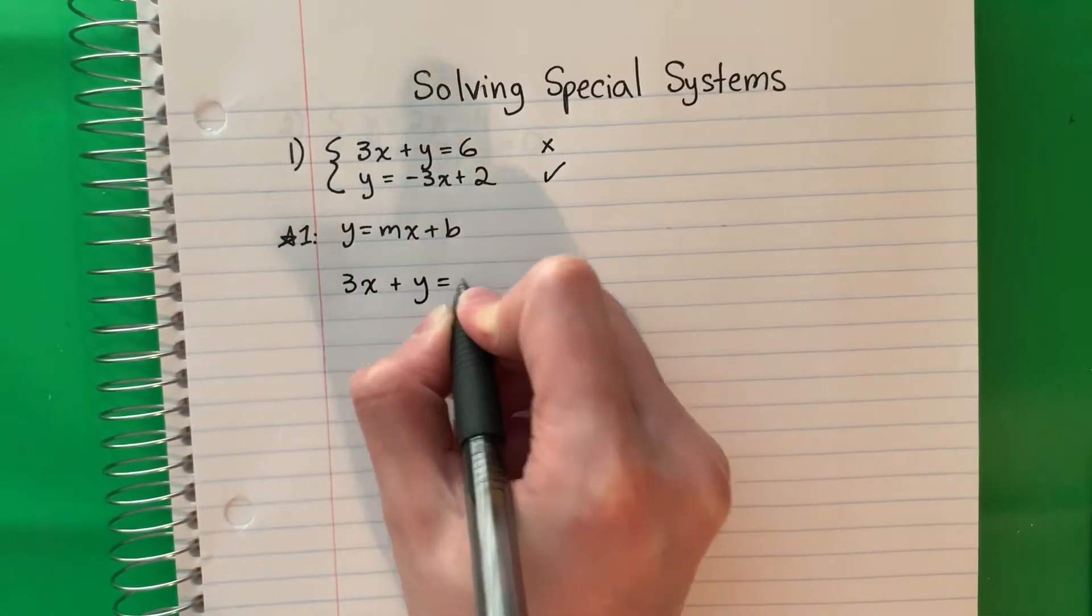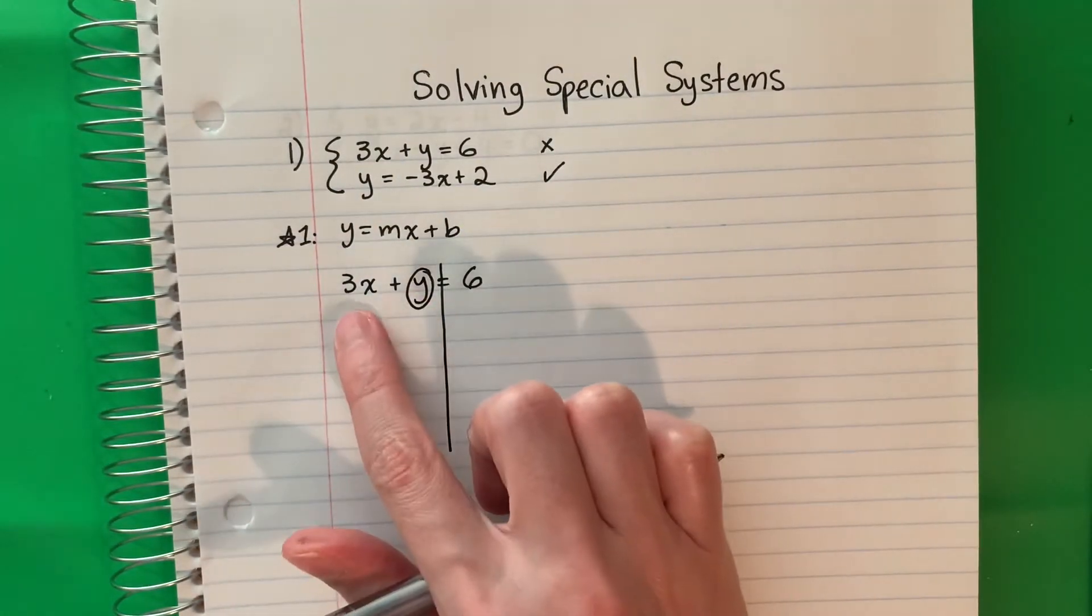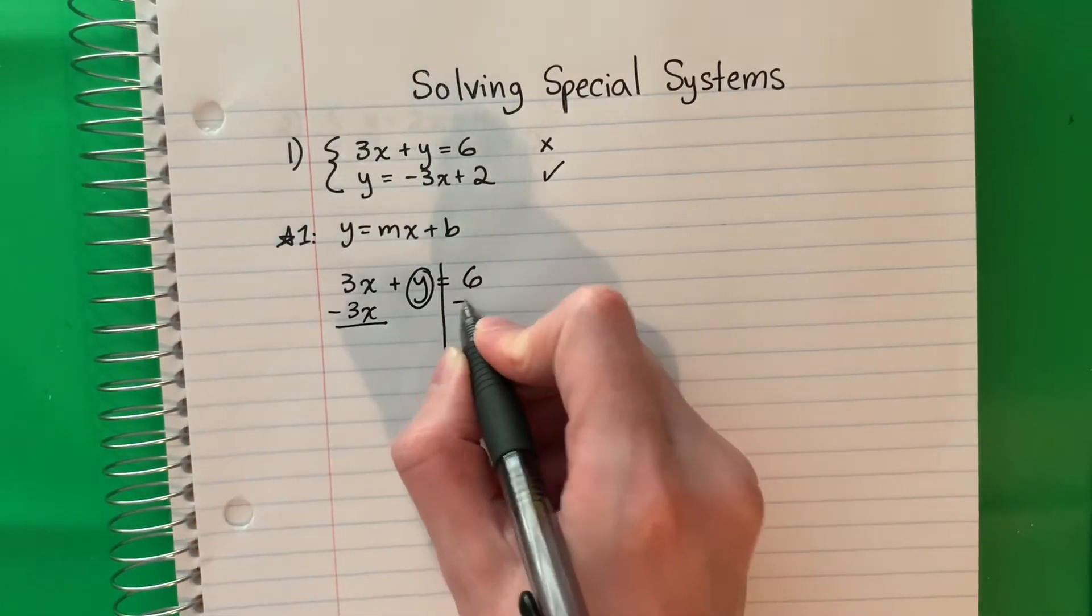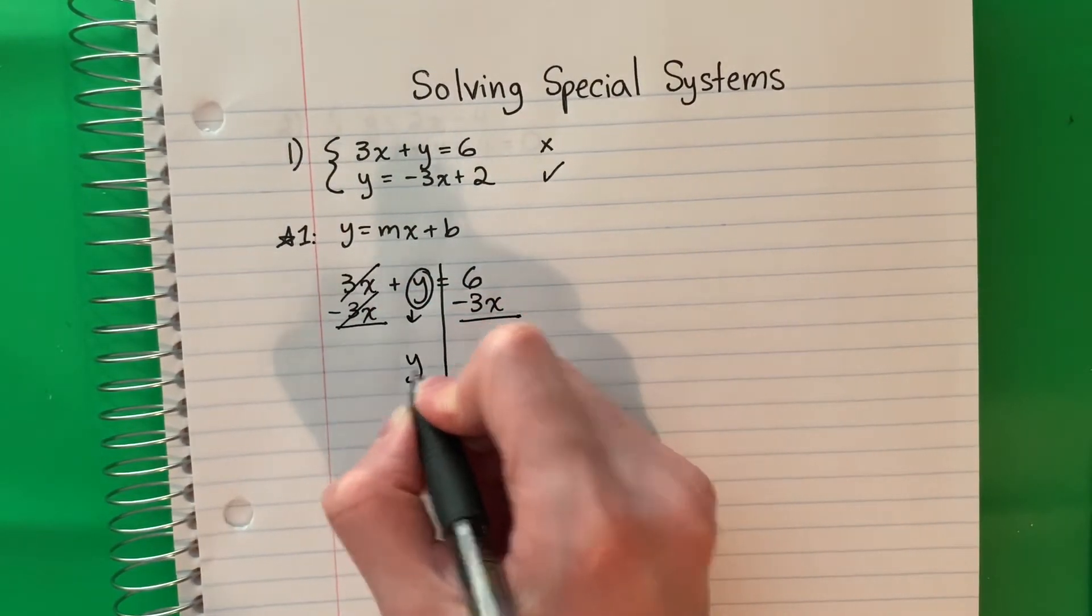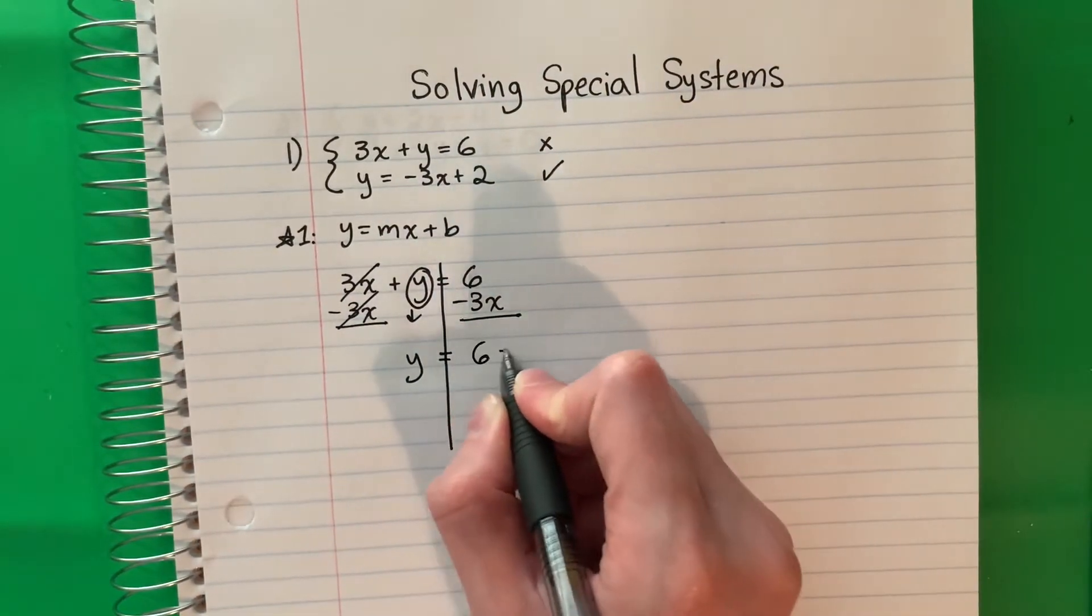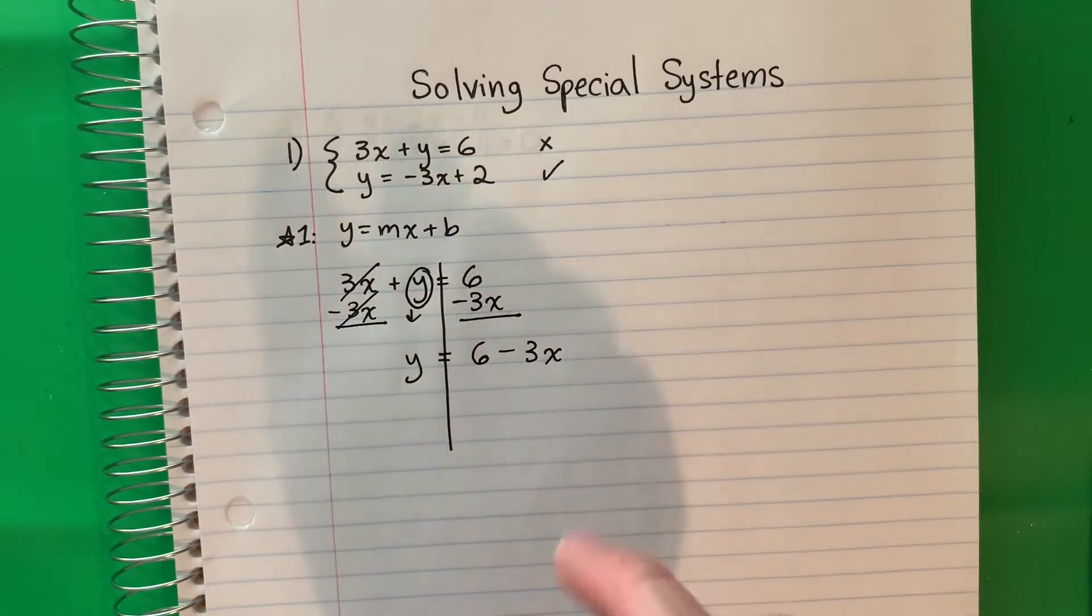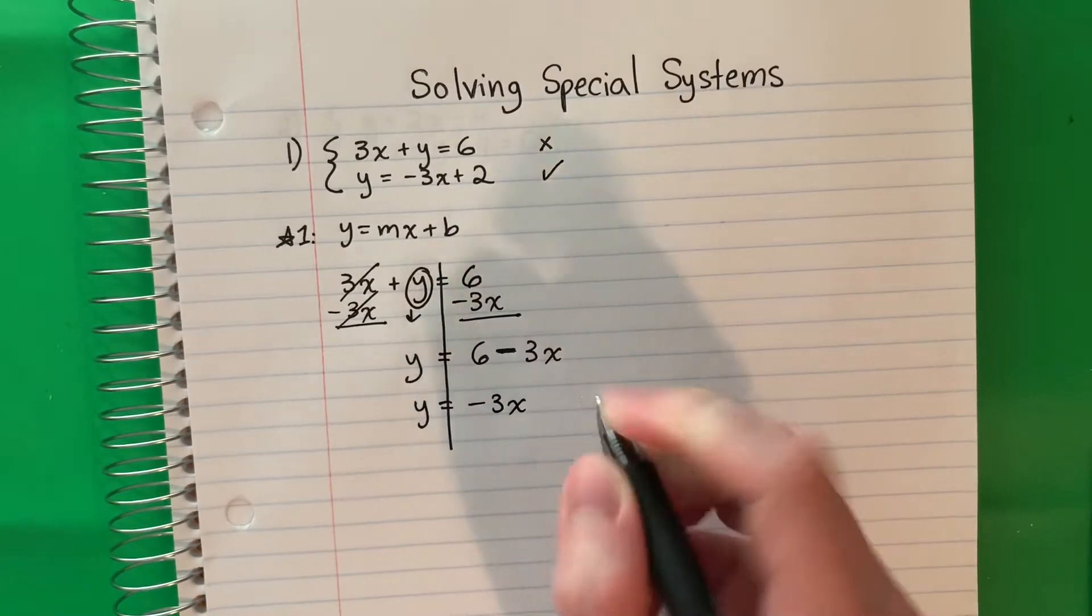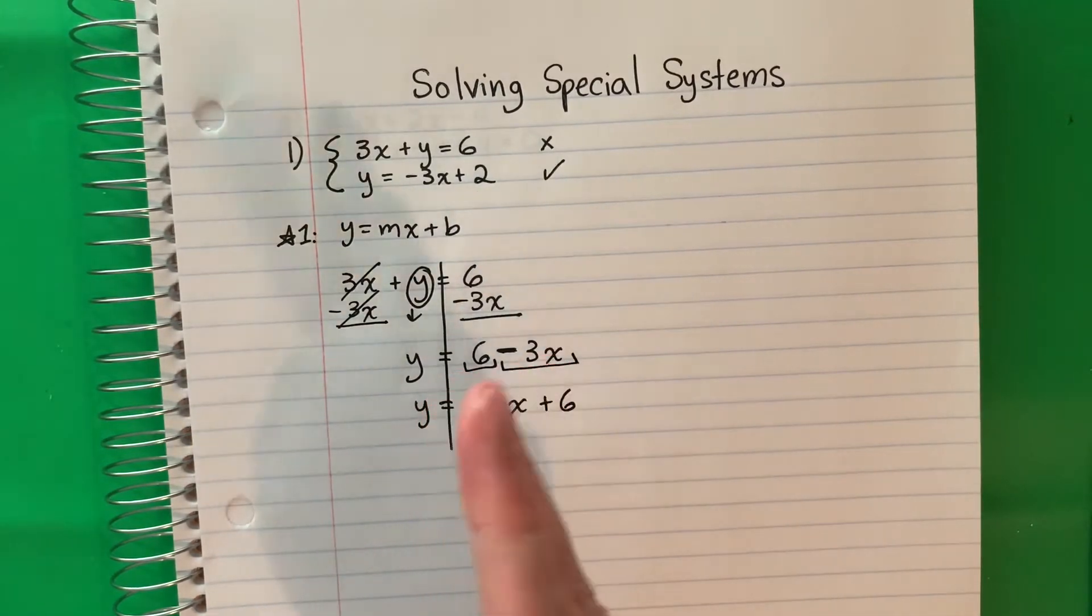So 3x plus y equals 6. I want the y alone so don't move the y. I'm going to move the 3x. This is positive, the opposite is negative. So minus 3x. Copy minus 3x. 3 minus 3 is 0, it cancels and I'm going to copy down y equals. Here there's x, here no, so they're different letters. Copy. And I just need to switch because I want that x in the middle. So y equals negative 3x and this is a positive 6, so plus 6.